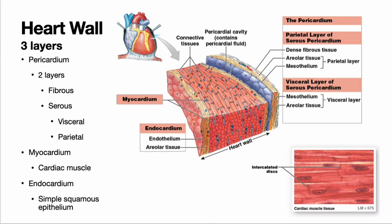If we look at the wall of the heart, we can see that it has three layers: we're going to have the pericardium; the myocardium, which is going to be the bulk of it and is the muscle that's going to do the job of the heart; and then we're going to have the innermost lining, the endocardium.